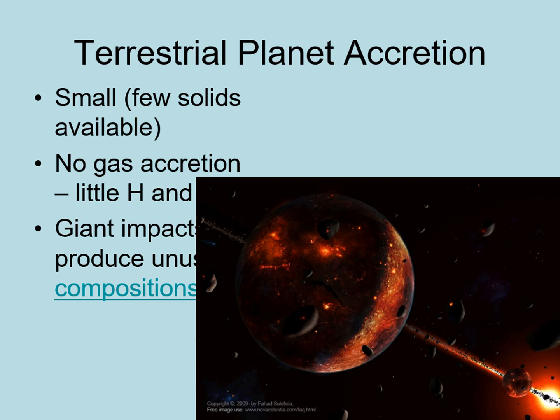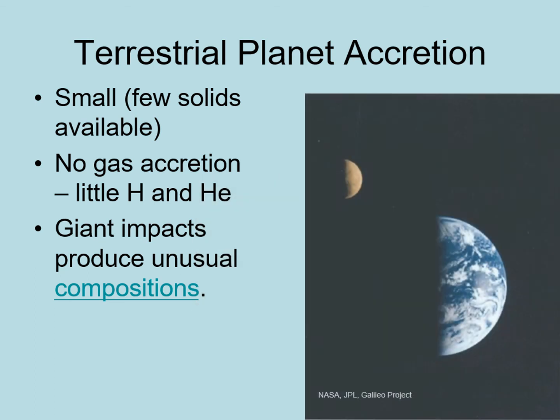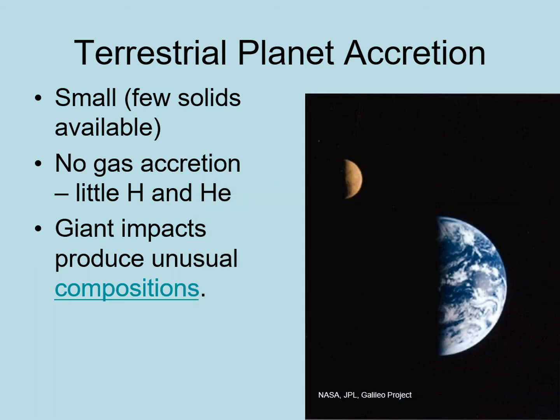Of course, we know of at least one example of a moon that formed just this way: the Earth's own Moon, which is one of the exceptional objects in our solar system. It's not only the largest moon in the inner solar system, it's also got a very tiny metal core. It's mostly rocky material, like a planet's mantle — just the sort of unusual composition we would expect to result from a giant collision.